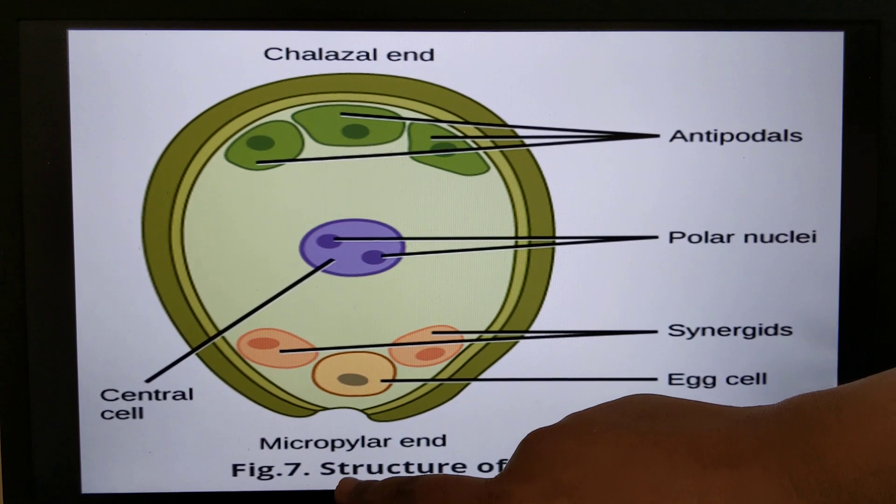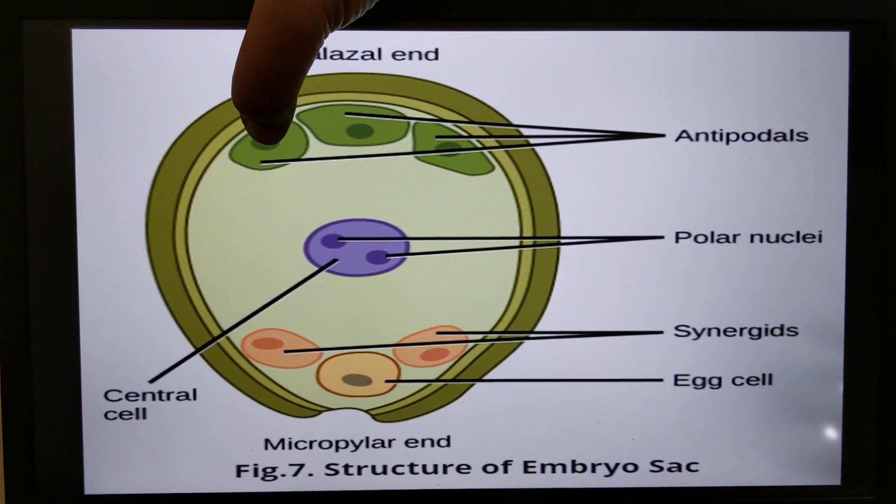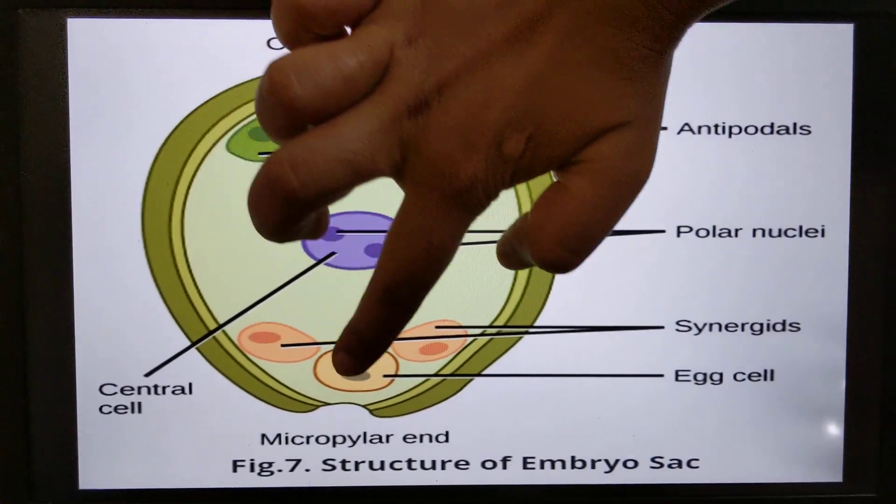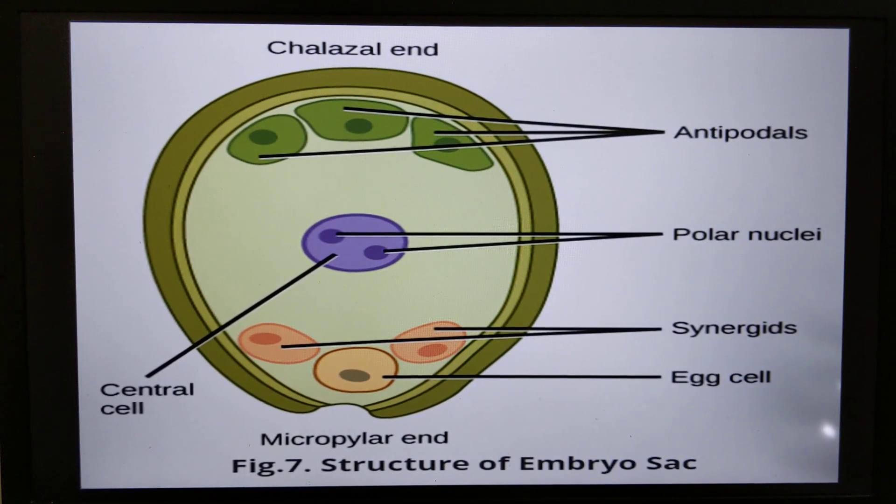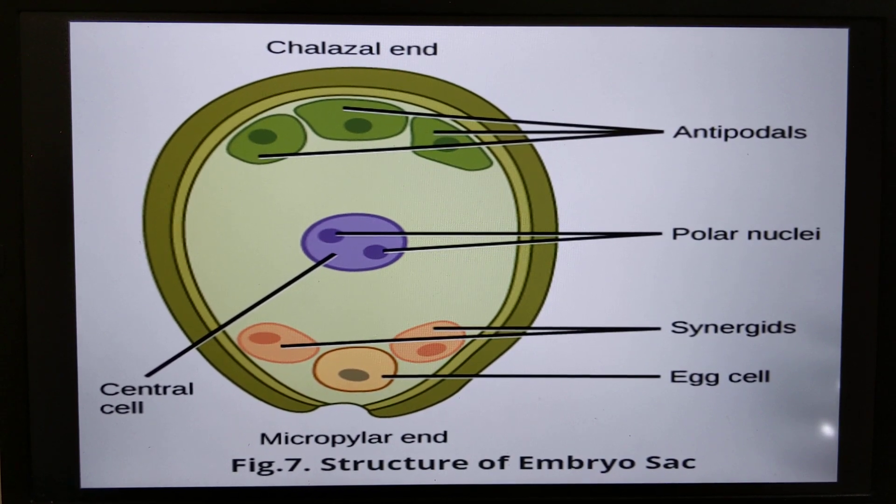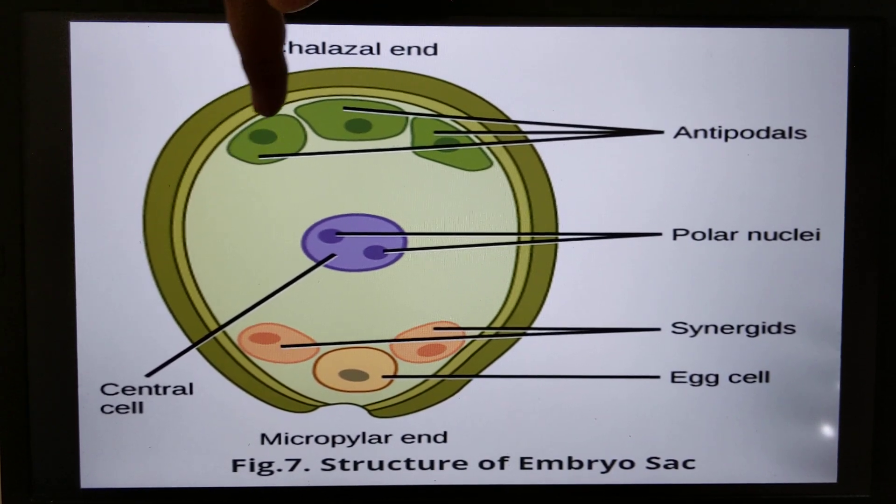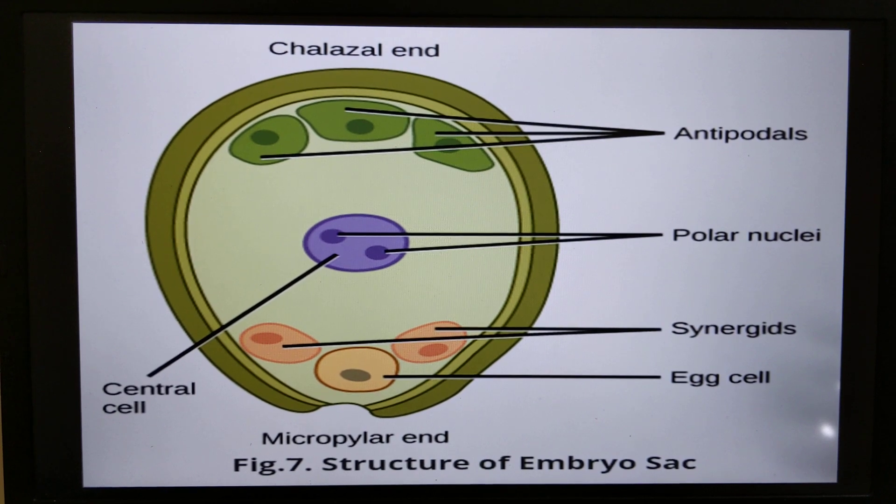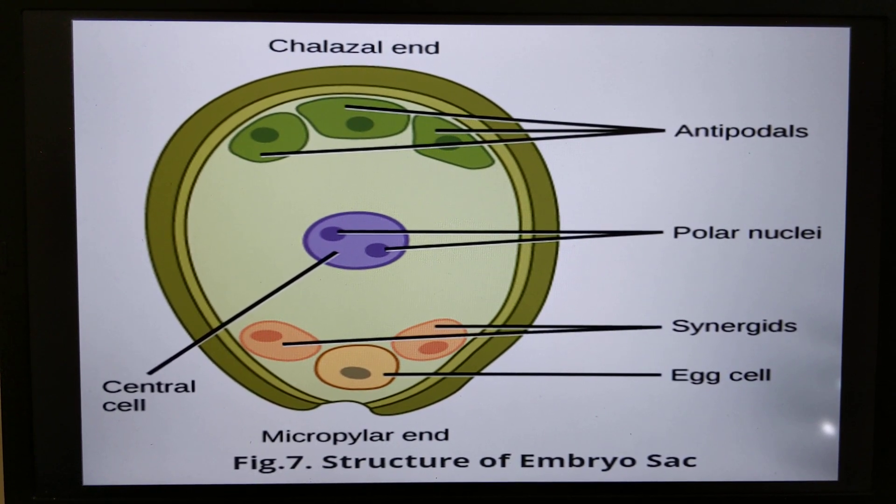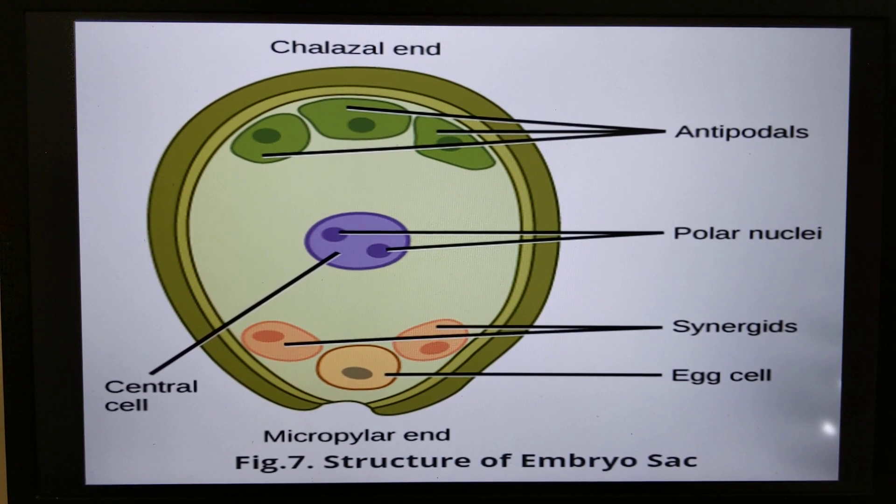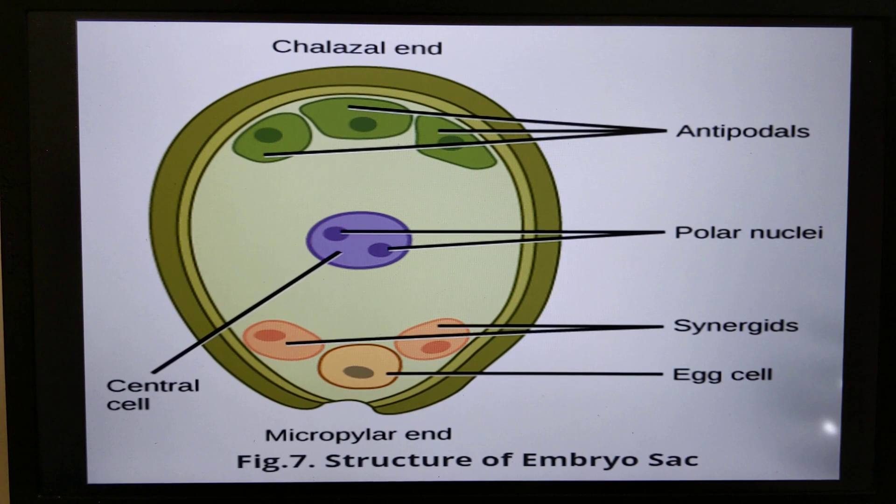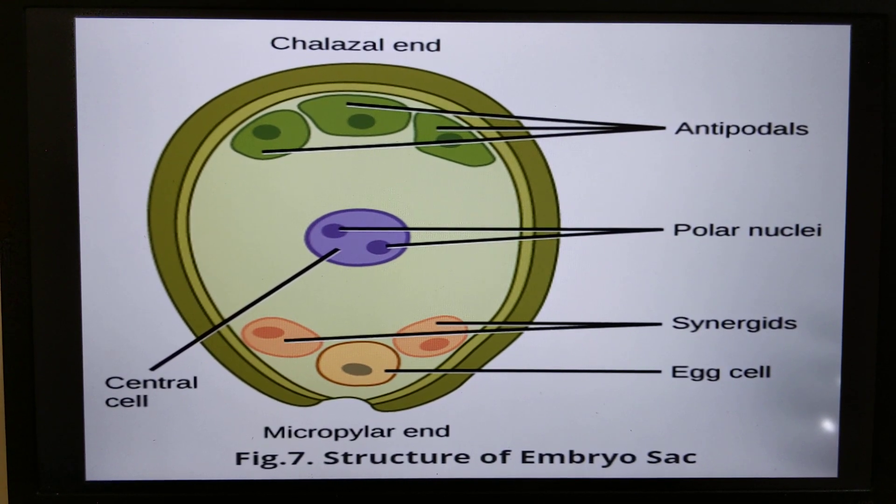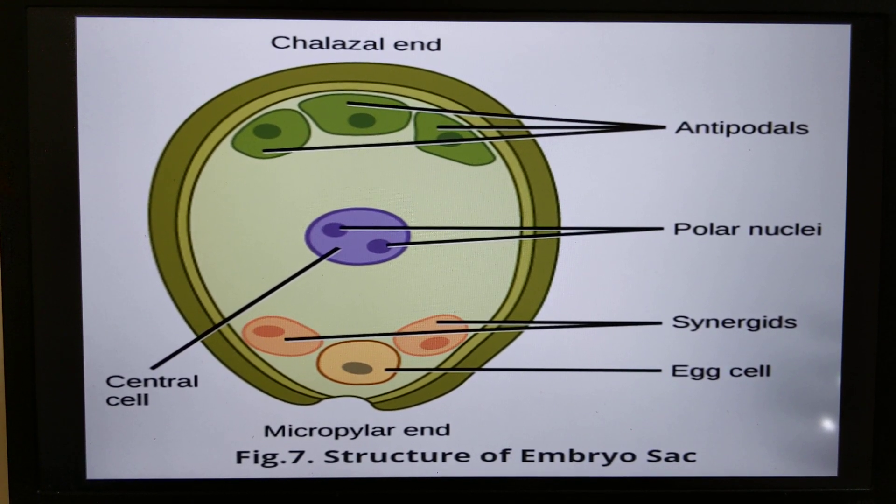Here you can see, if we count the nuclei: 1, 2, 3, 4, 5, 6, 7, 8. So how many nuclei? After the development of female gametophyte, 8 nuclei are formed. If we count the cells: 1, 2, 3, 4, 5, 6, 7. So how many cells? 7 cells.